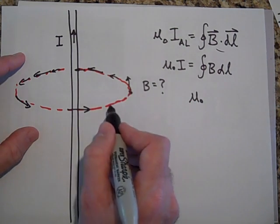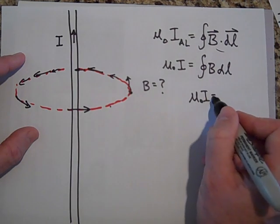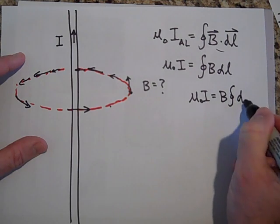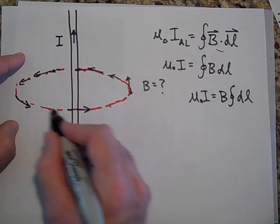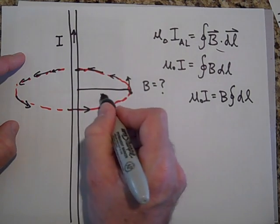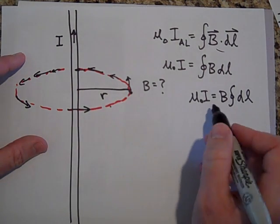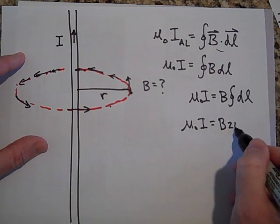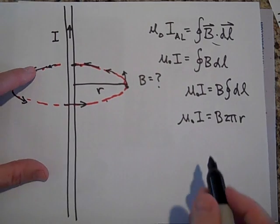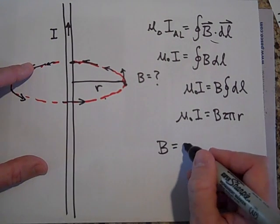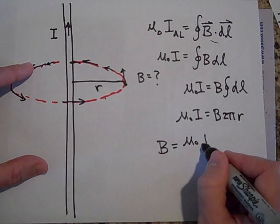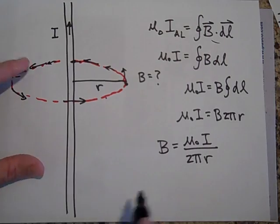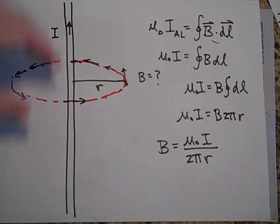Why would B be any stronger here than here? So I have mu naught I equals B times the sum of all the DLs. When I sum up all those DLs, if the distance is R, that gives me 2πR. Bringing that 2πR to the other side, the B for a very long — really an infinitely long — wire is mu naught I over 2πR. I'll need that for this problem.